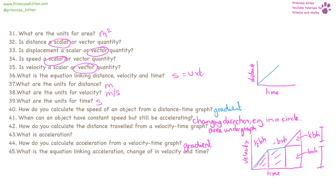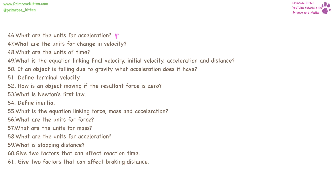The definition of acceleration is change in velocity over time. The equation is: acceleration equals delta velocity over time, where delta means change in. The units for acceleration are metres per second squared, the units for change in velocity are metres per second, and the units for time are seconds. The equation linking final velocity, initial velocity, acceleration, and distance is: final velocity squared minus initial velocity squared equals 2 times acceleration times distance.